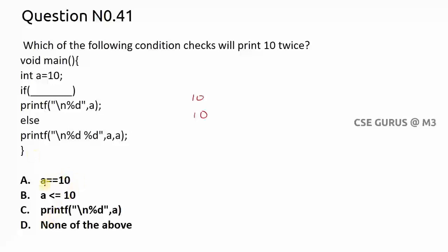If we include option A — if (a == 10) — what is a value? 10. 10 == 10 is true, so it prints %d a, that means 10 will be printed once. It comes out of the block, so a is printing only once — not the answer. Option B: a <= 10 — 10 <= 10 is true, but it will print 10 only once. So this answer is also not correct.